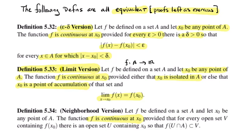Definition 5.34 is the neighborhood version. For x₀ in A, f is continuous if for every open set B containing f(x₀), there is some delta neighborhood of x₀ whose image lands in B. It's equivalent to saying: for every epsilon, you can find a delta neighborhood around x₀ so that if you're in that delta neighborhood you're mapped into the epsilon neighborhood — just rephrased using open sets.